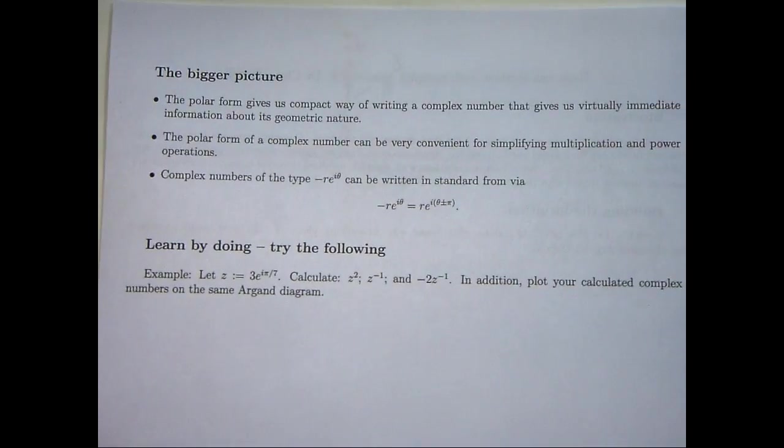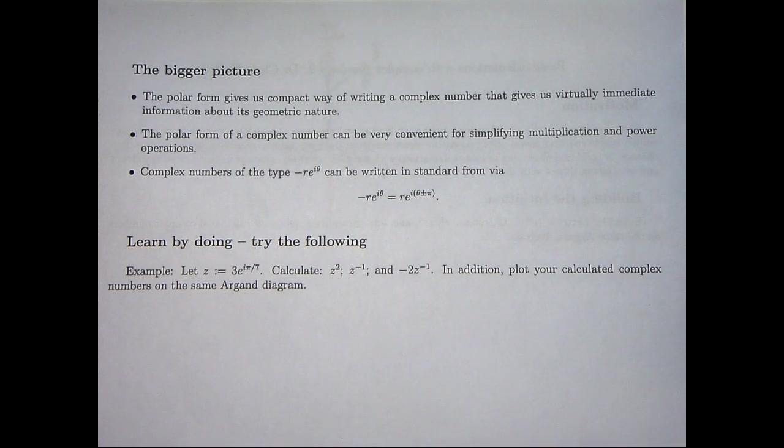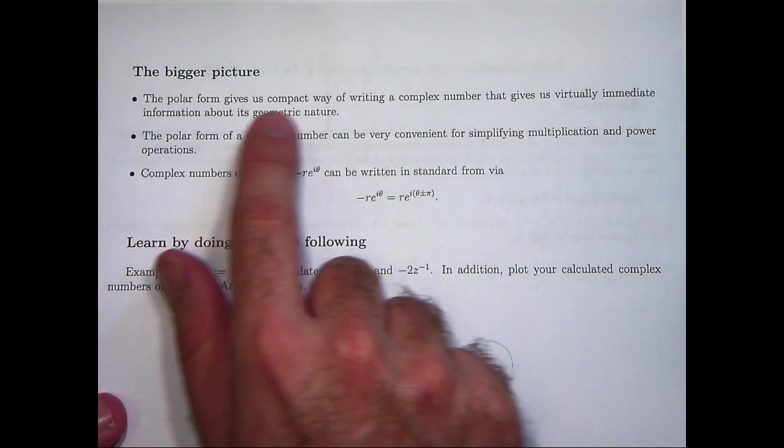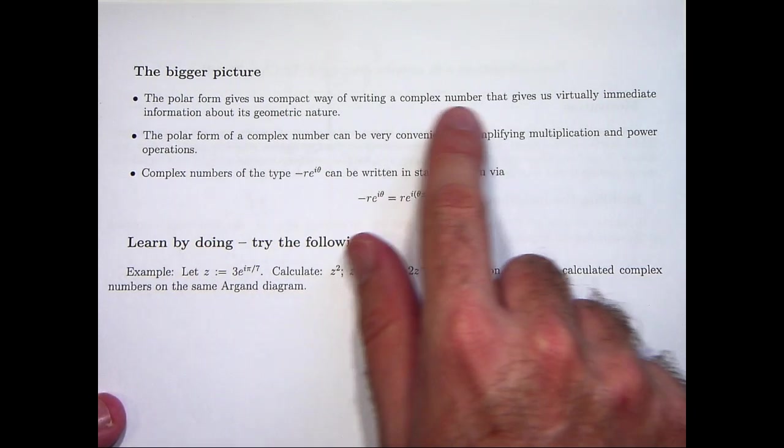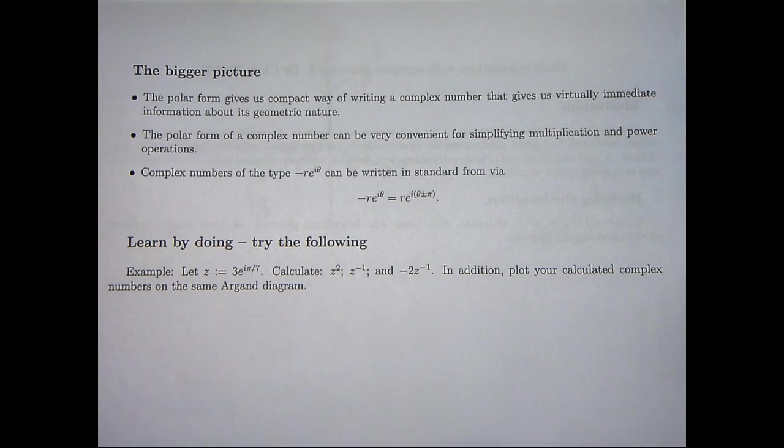But let's have a look at the bigger picture here. What are the underlying concepts? Well, the polar form of a complex number gives us a compact way of writing a complex number, giving us virtually immediate information about the geometric nature of the complex number. We have the angle to the positive real axis and the length to the origin immediately.